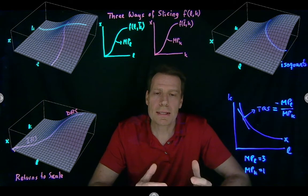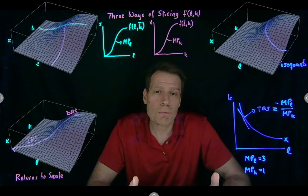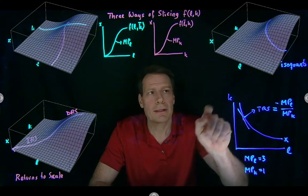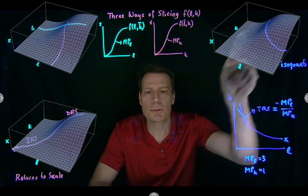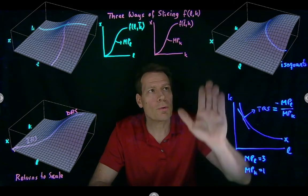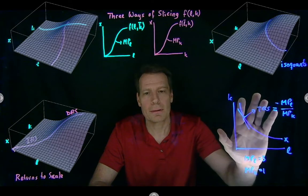Now, these three slices are economically meaningful in the theory of the firm in a way where only one of them was meaningful in the theory of the consumer, where instead of output, we measured utility, and instead of inputs, we measured goods. In the case of utility functions, we only took the horizontal slices and we only mapped the indifference curves.